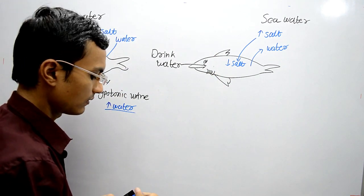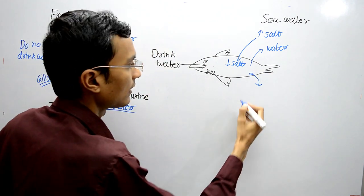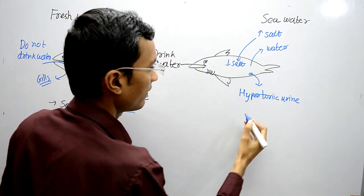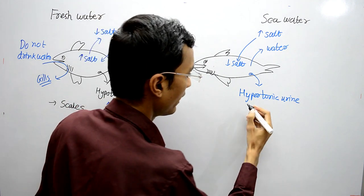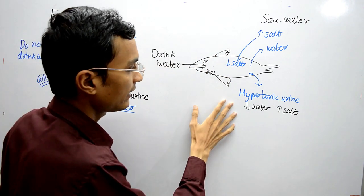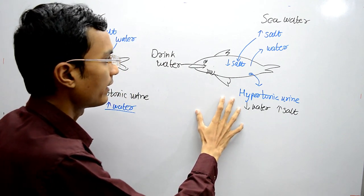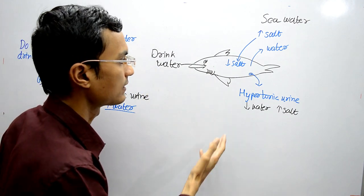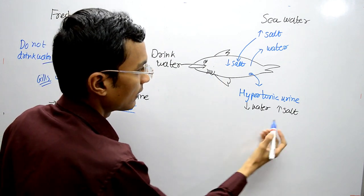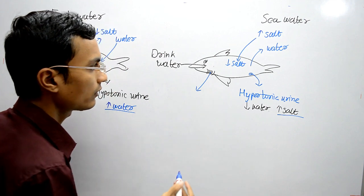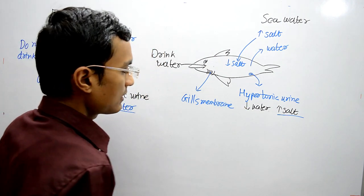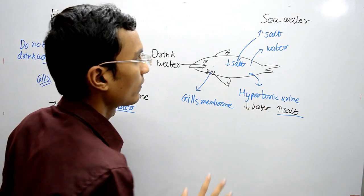There is one more mechanism: the fish releases hypertonic urine, which has less water and more salt. Water is excreted in a lower amount in the form of hypertonic urine, and the fish continuously drinks water to maintain water balance. The excess salt entering the body is also removed through hypertonic urine and through the gill membrane.